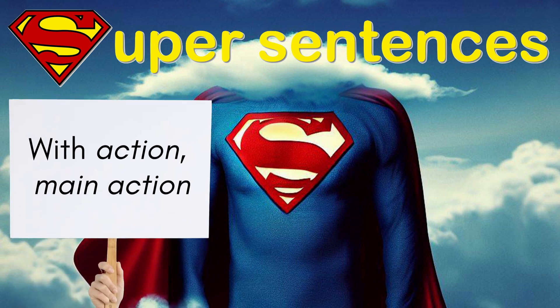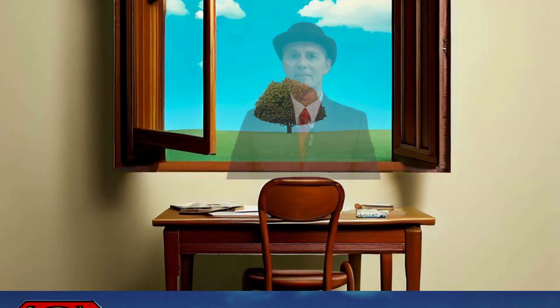The With Action Main Action super sentence is a great way to add detail to the action that is happening in your stories. The richer you make your descriptions, the more vividly your reader can imagine the events unfolding. Instead of simply seeing the words on the page, they'll be transported into the story, living it as they read. So adding detail is important.